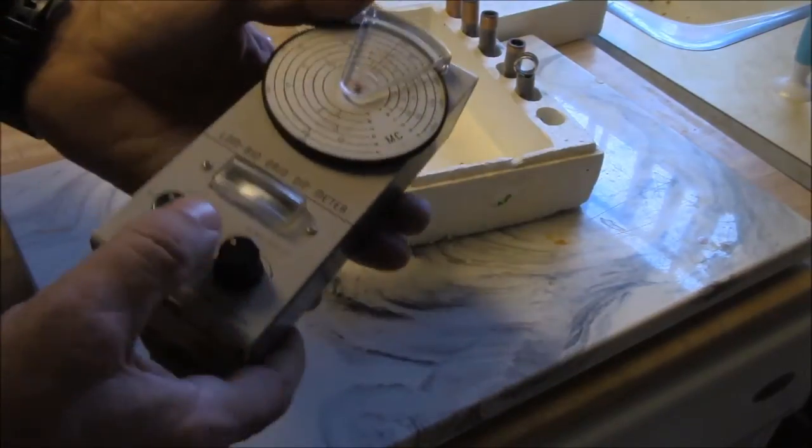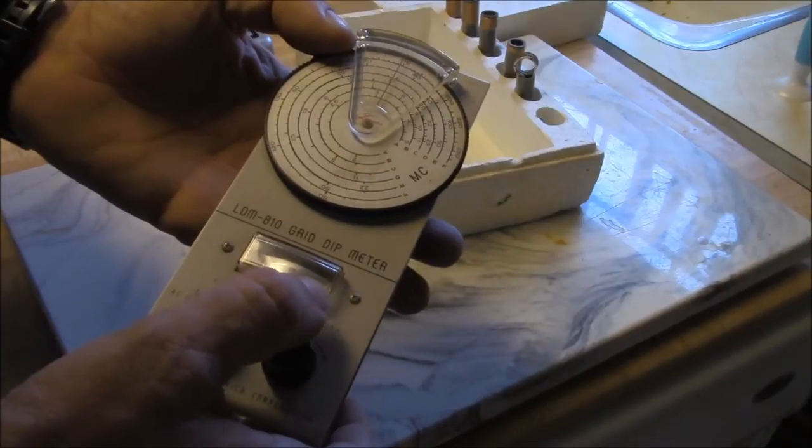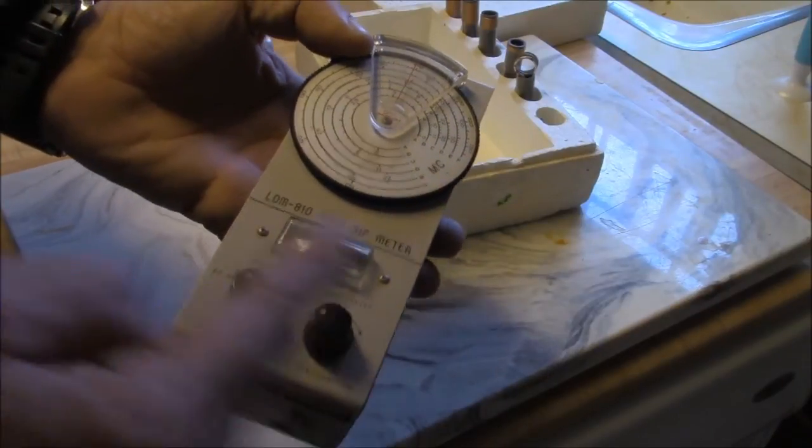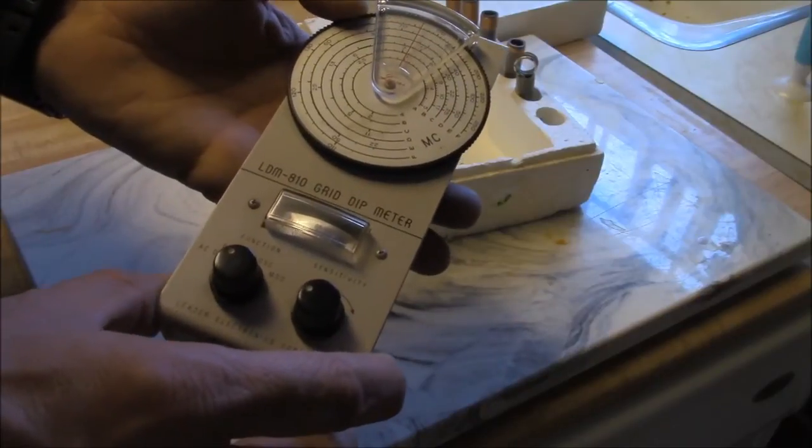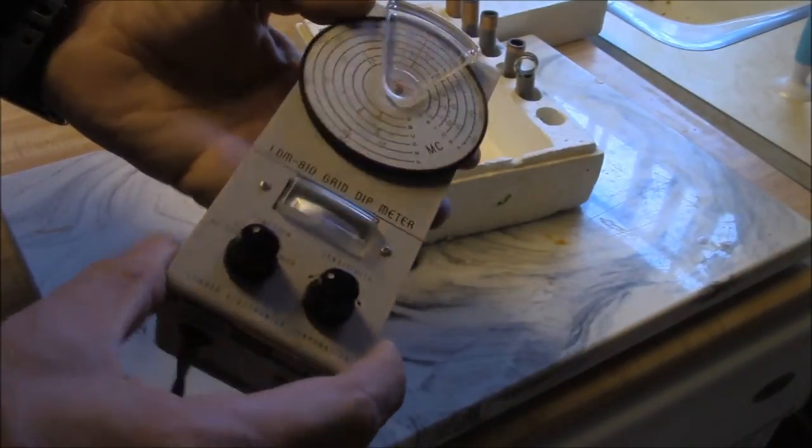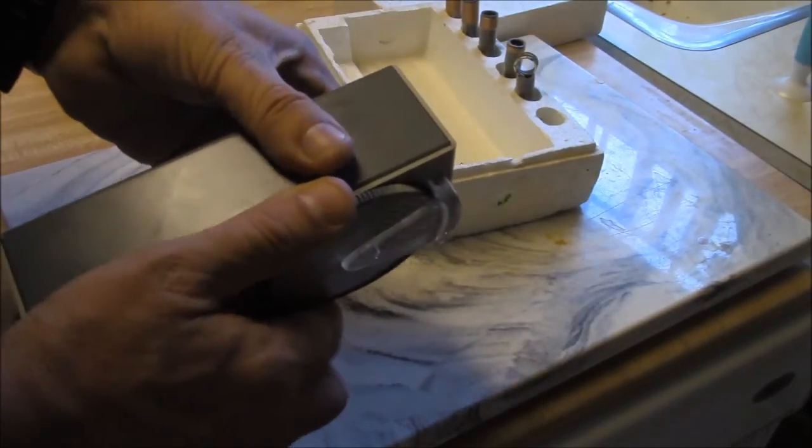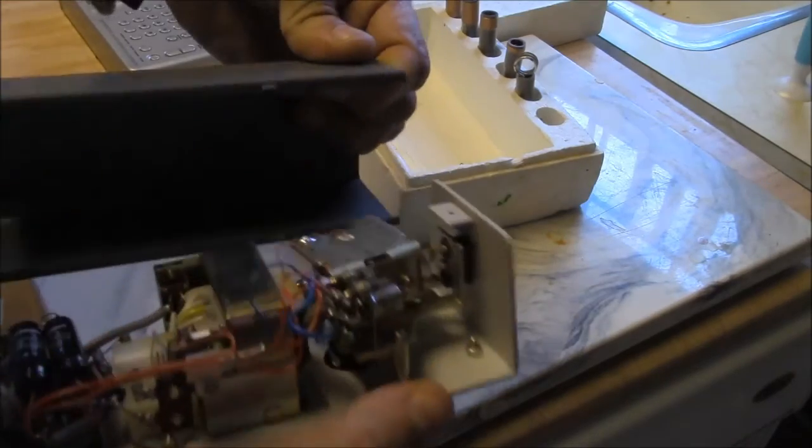When you go to do that, what happens is when you cross resonance of the crystal or the tuned circuit, the meter actually dips down. Now I'll warn you, if you're doing this with a crystal, that dip is pretty pronounced and very very sharp because the Q is very high on a crystal. So you might have to get out your best behavior there to tune something like that.